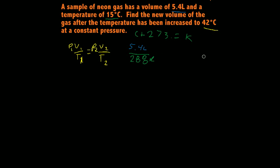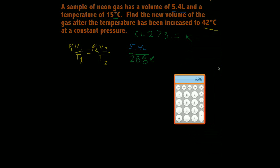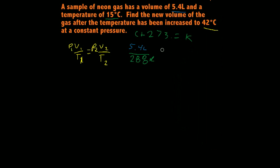And our second temperature is 42 degrees Celsius. So 42 plus 273 equals 315. 315 degrees Kelvin.